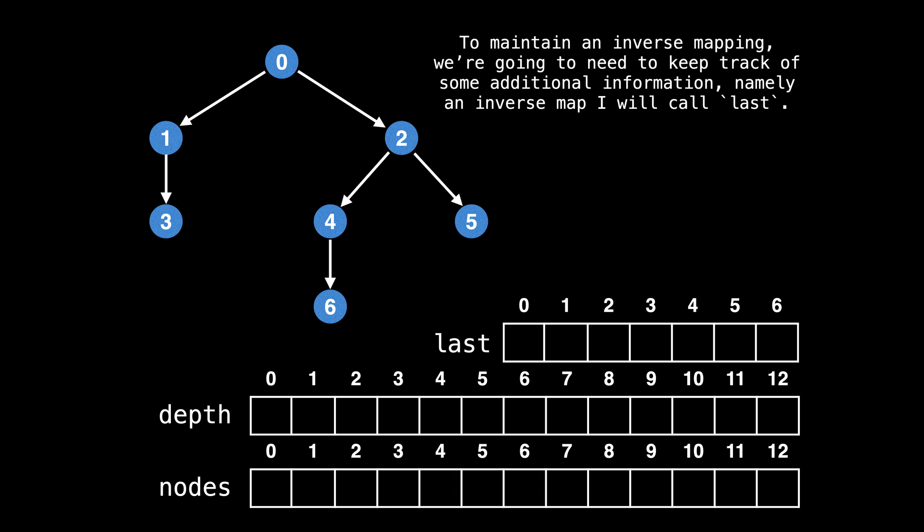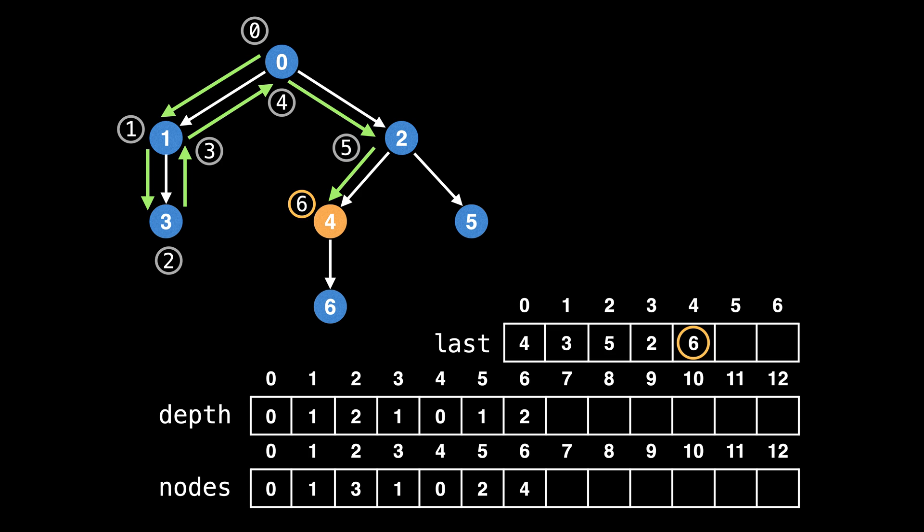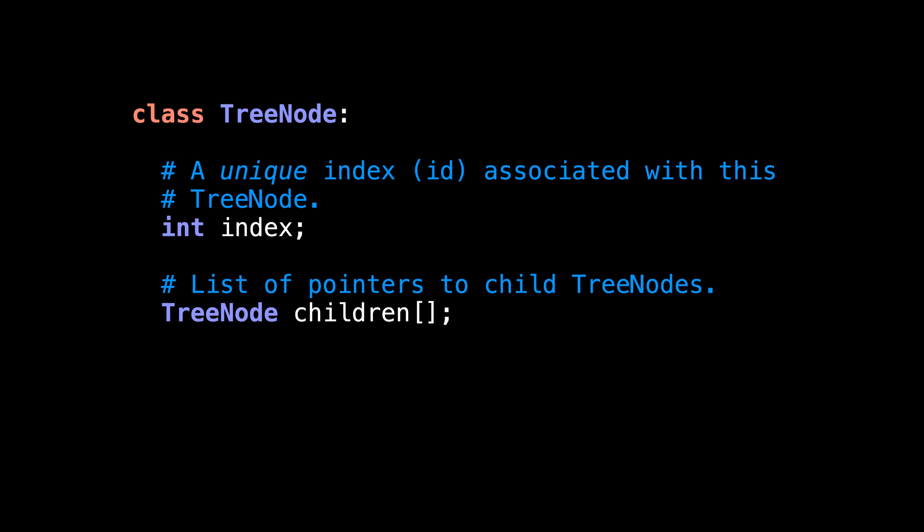As I mentioned earlier, another piece of information we want to track is the inverse mapping between each node and its Eulerian tour index. Since we are only going to be saving the last encountered index position for each node, I'm naming the inverse map last. Alright, we're going to do an Eulerian tour just like before, but this time we're also going to keep track of the last occurrence of each node in the last array. I'm going to let the animation play and you try and follow along. So that was the Eulerian tour lowest common ancestor algorithm in a nutshell. Now let's have a look at some pseudo code on how it's implemented.